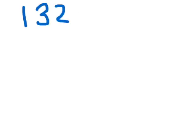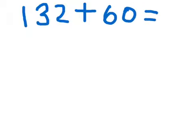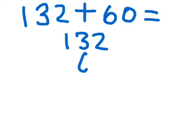If you want to do 9132, add 60. You do the grid method, so you have to do the biggest one first — 132. And then you have to line up the digits, so you put 60 here.